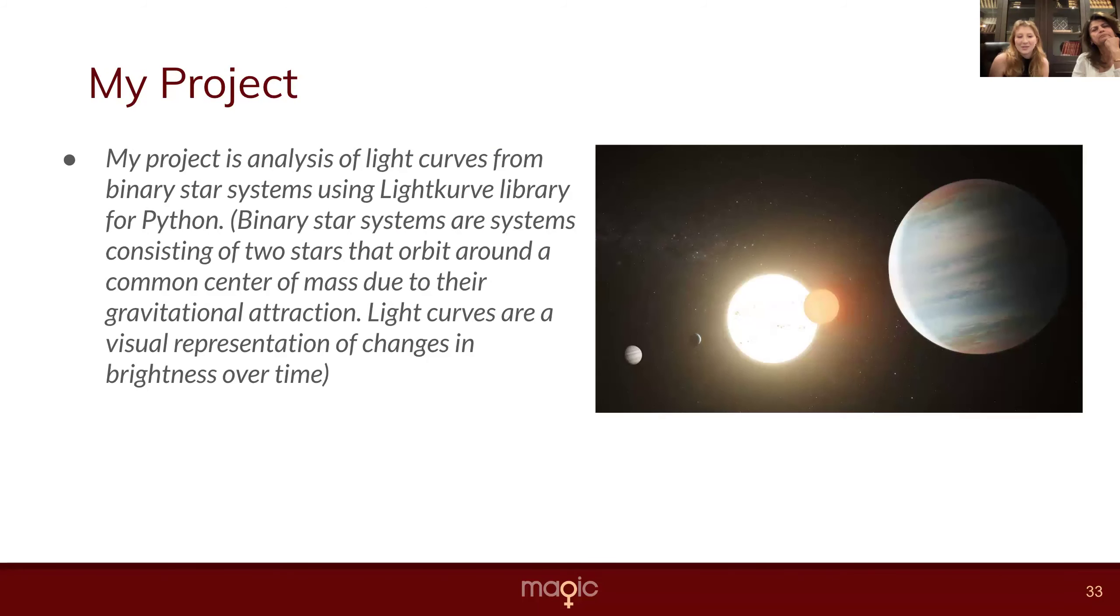So my project included analysis of light curves from binary stars using the library LightCurve. Binary star systems are two stars who orbit each other. And their light curves are very interesting, especially the system that I focused on. And due to the changes in light as they orbit each other, we can see how the brightness increases and decreases over the period of time as the stars rotate around each other.